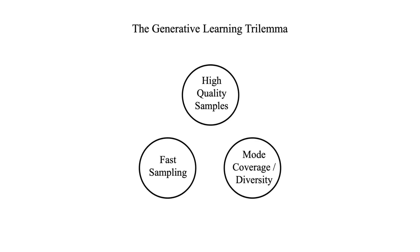First, obviously we want high quality samples. Next we want fast sampling because nobody likes waiting. Finally we want diversity in the generative samples. This is also called mode coverage.